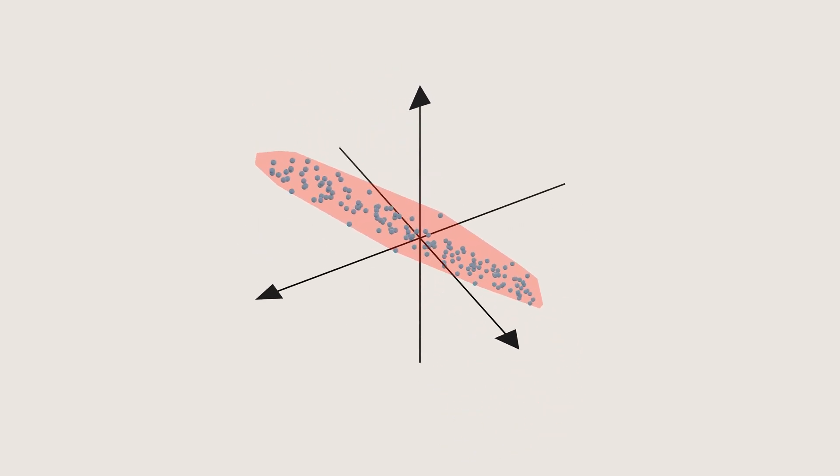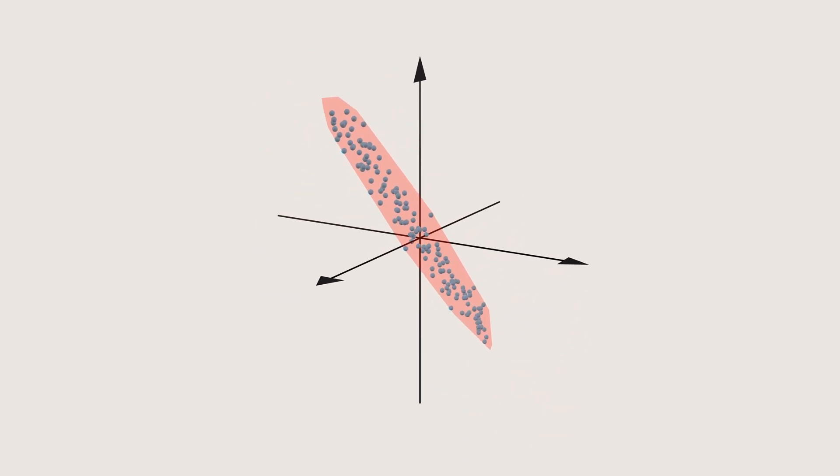Wouldn't it be great if we could leverage this pattern and find a way to compress the data set by reducing its dimensions while still keeping the essence of the data intact? Well, that's exactly what PCA does. PCA identifies these patterns and helps us to represent the data in simpler, lower dimensional form without losing most of the valuable information. Let's dive into how PCA works.